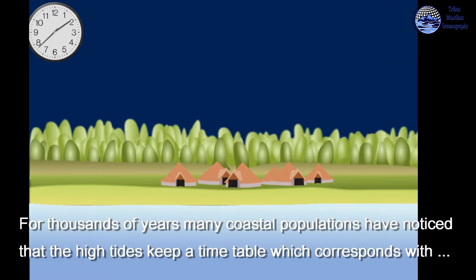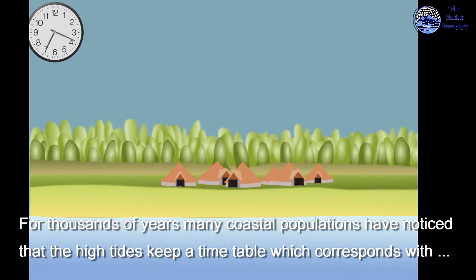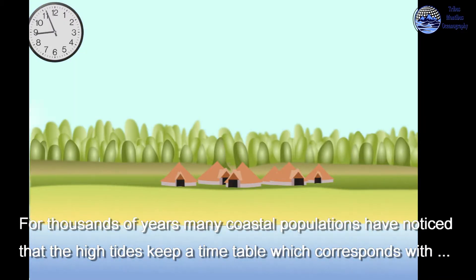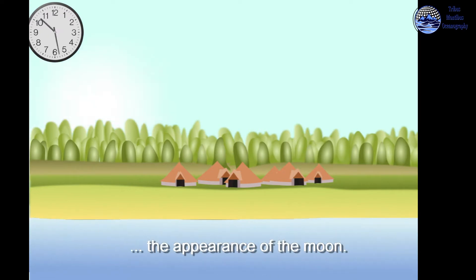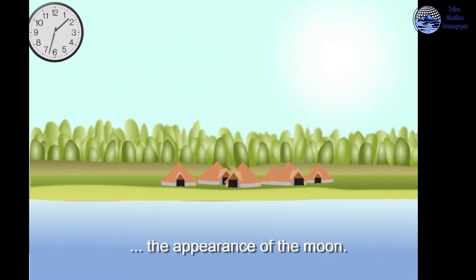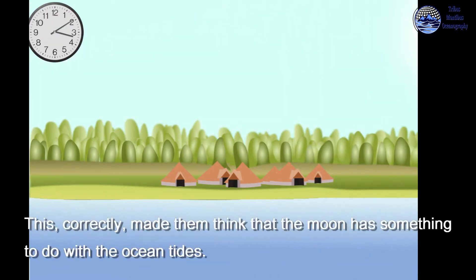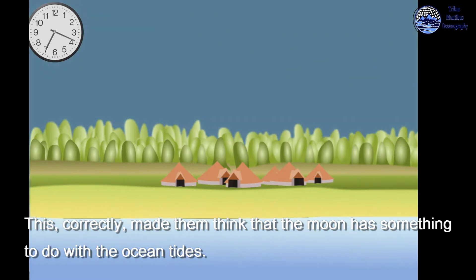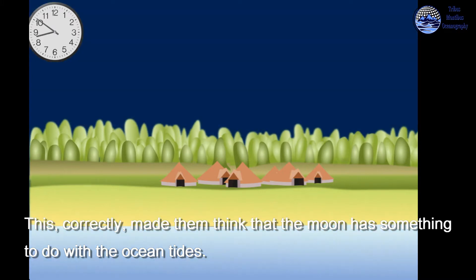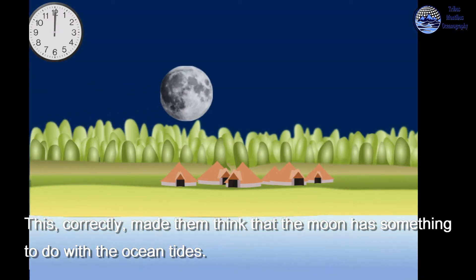For thousands of years, many coastal populations have noticed that the high tides keep a timetable which corresponds with the appearance of the moon. This correctly made them think that the moon has something to do with the ocean tides.